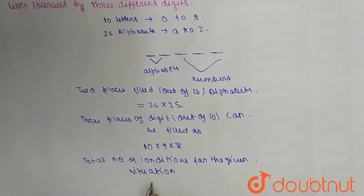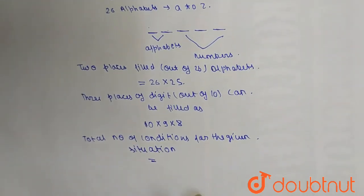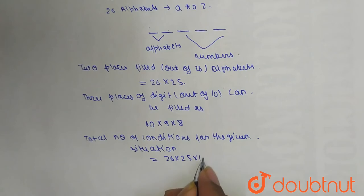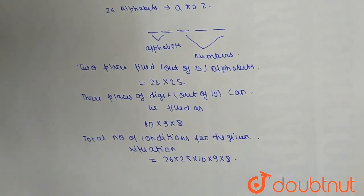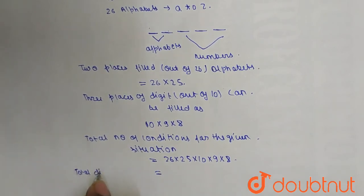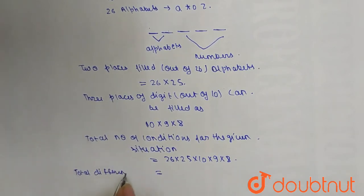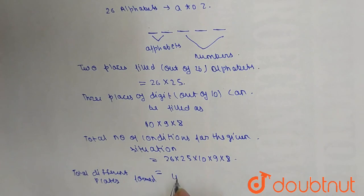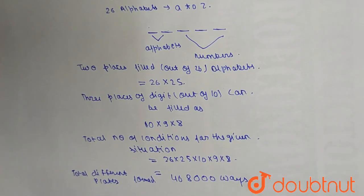So the total number of conditions for the given situation is equal to 26 × 25 × 10 × 9 × 8. The total different plates that can be formed equals 468,000 ways. Thank you friends, hope you liked the video.